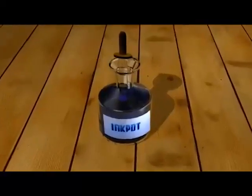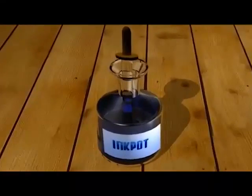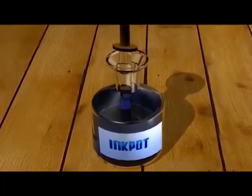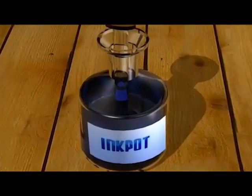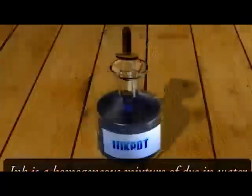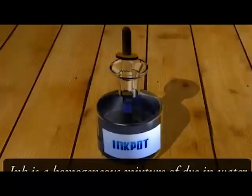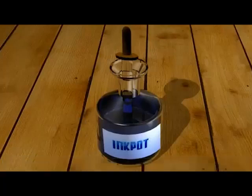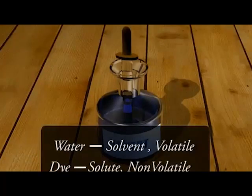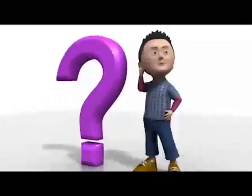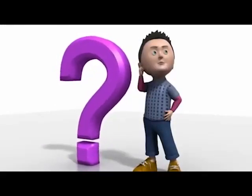Let us see an example to understand this better. The colored component or dye can be obtained from blue or black colored ink by the process of evaporation. This is because ink is a homogeneous mixture of dye in water, where water, the solvent, is a volatile component, and dye, the solute, is a non-volatile component. But what actually is the procedure for separating the dye? Well, here it is.